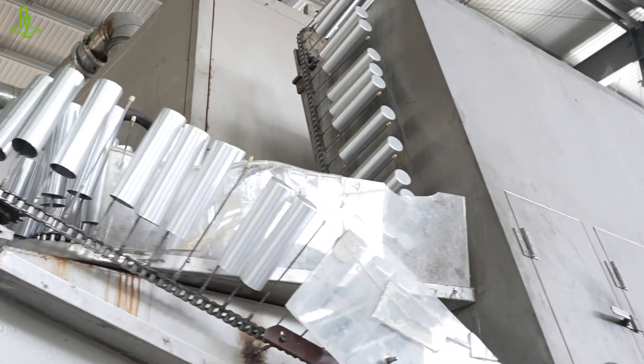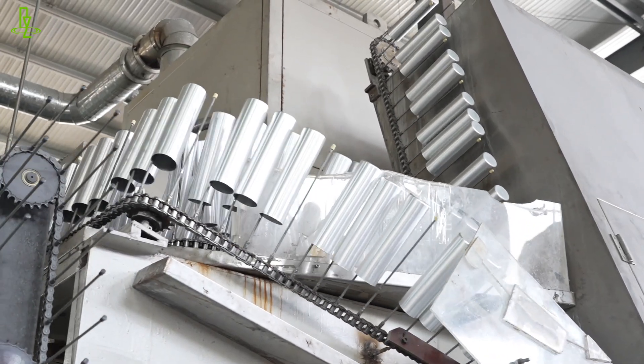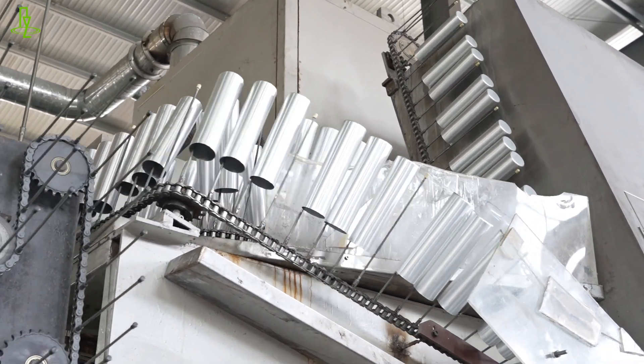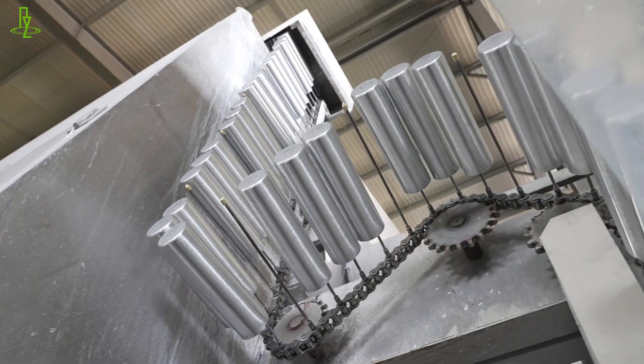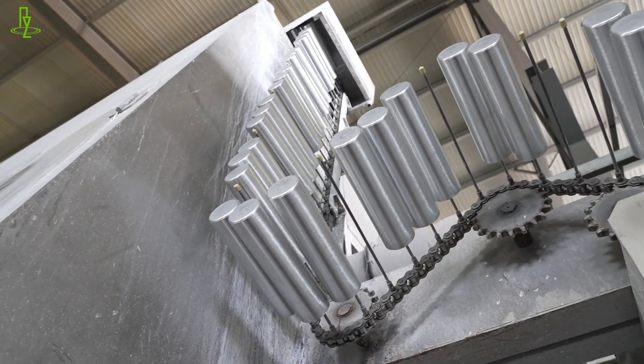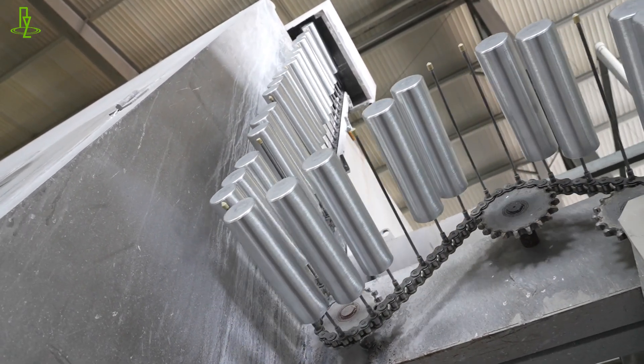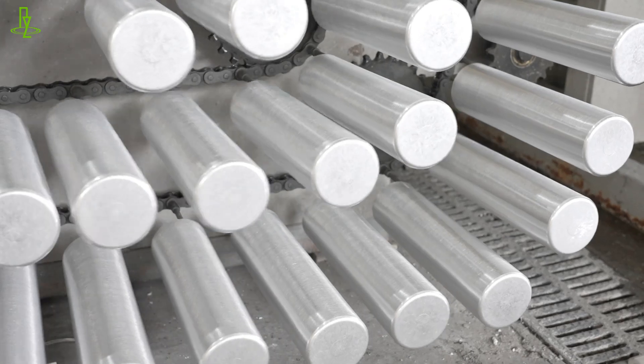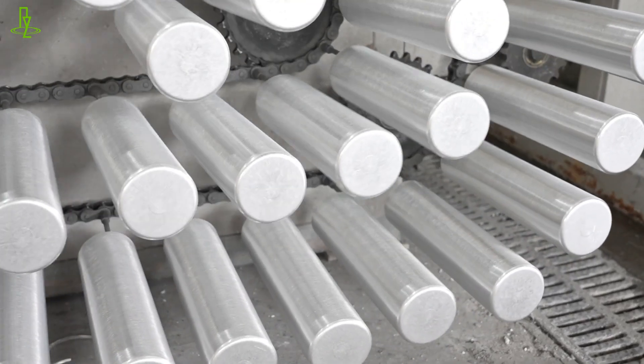Today, our factory spans a massive 14,000 square meters, and we specialize in creating a wide range of aluminum products: bottles, tubes, and even special-shaped cans. Whether it's for personal care, food, household items, or the automotive industry, our packaging is designed to elevate your products.